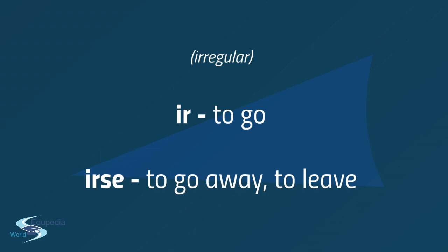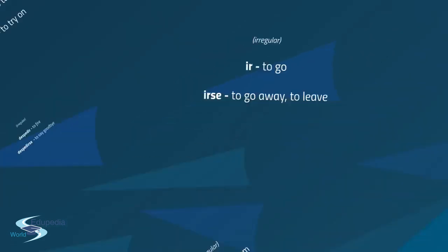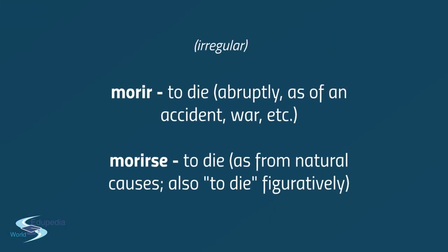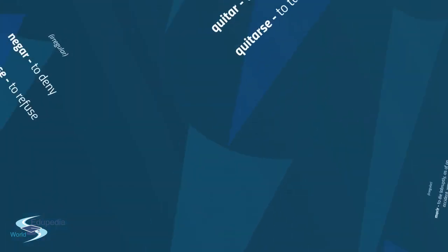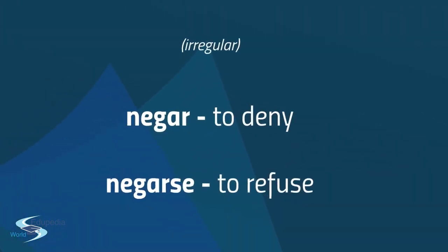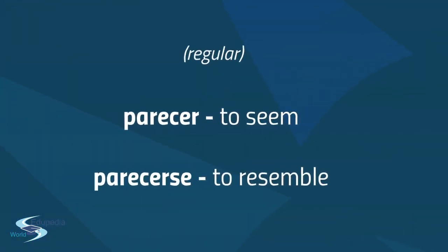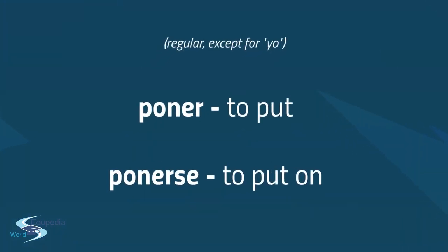Irse is often used to mean to leave. Morir means to die, as in an accidental or violent death, while morirse means to die of natural causes — also used figuratively. Negar means to deny, negarse means to refuse. Parecer means to seem, parecerse means to resemble. Poner means to put, ponerse means to put on — this is regular except for the yo form.